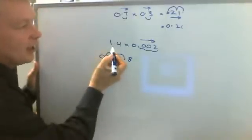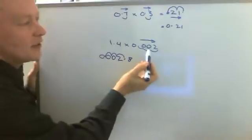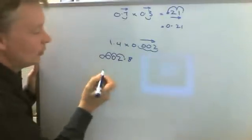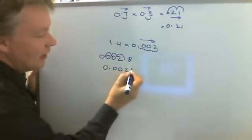So in other words, 1.4 multiply by 0.002 will be 0.0028.